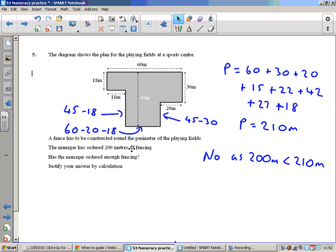That'll be 22 and that'll be 15. The perimeter is the total distance around the shape which should be 210 meters, adding up all the sides. Does he have enough? No, he doesn't have enough. He's only ordered 200, he needs 210, so no, as 200 meters is less than 210 meters.